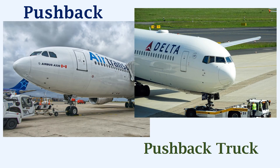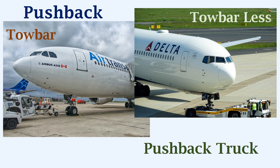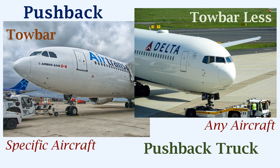The pushback trucks can be broadly classified into two types: trucks with tow bar, and tow barless trucks. The trucks with tow bar can be used on specific aircraft types only, but the tow barless truck can be used on any aircraft type. In the trucks with tow bar, the tow bar is connected to the nose wheel. In the tow barless trucks, the entire nose wheel assembly is lifted up.